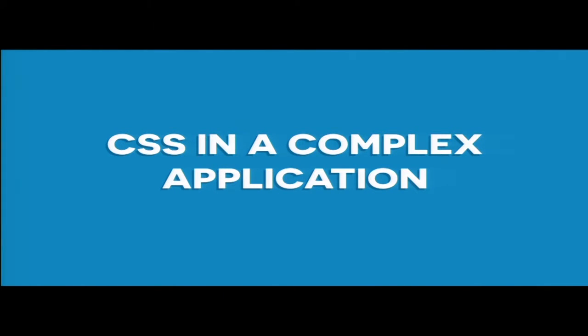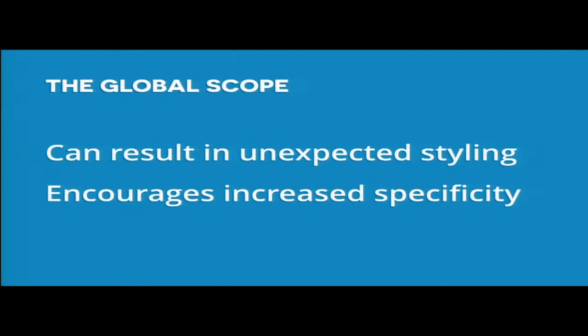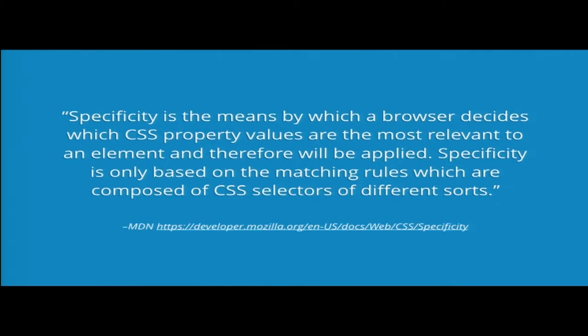What I really want to talk about is CSS in a complex application — how do you set it up, how do you deal with the global scope? Everything in CSS is globally scoped — when you style an 'a' it applies to every single 'a' ever, and there's no scoping of components. It can be frustrating if you've dealt with that — it results in unexpected styling and collisions, and the way it's designed sort of encourages you to increase specificity to get around it.